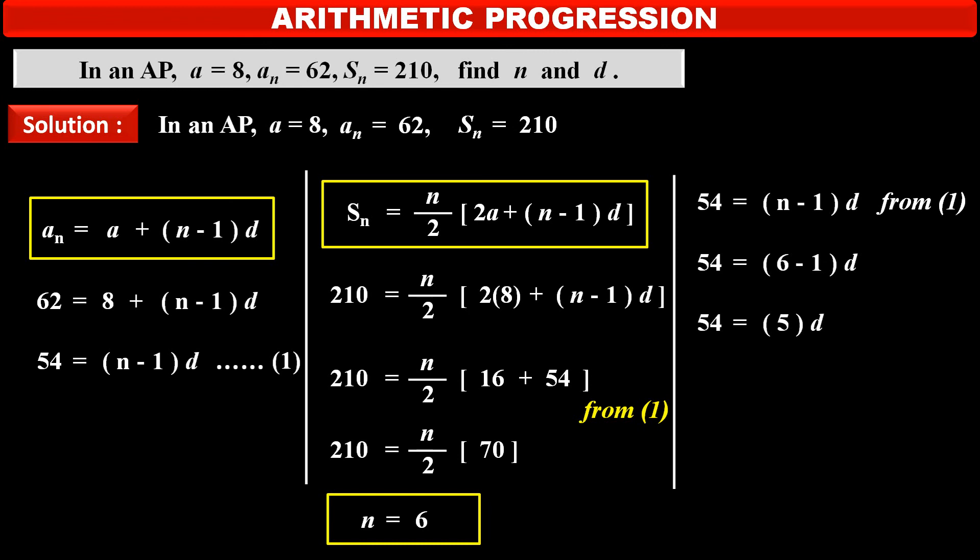Dividing both the sides by 5, we get d, common difference d, is equal to 54 upon 5.